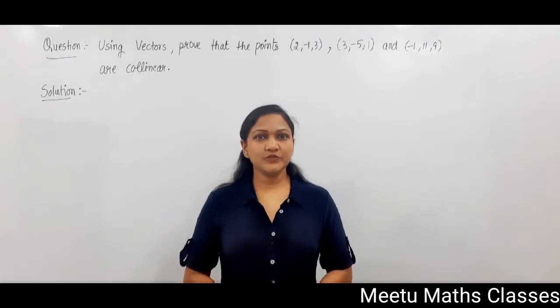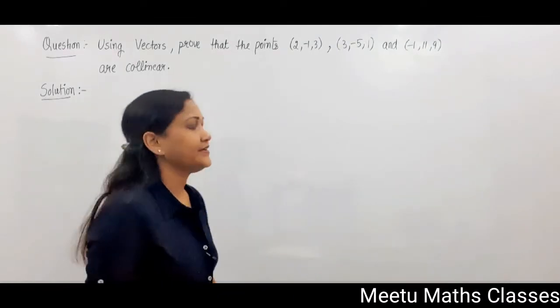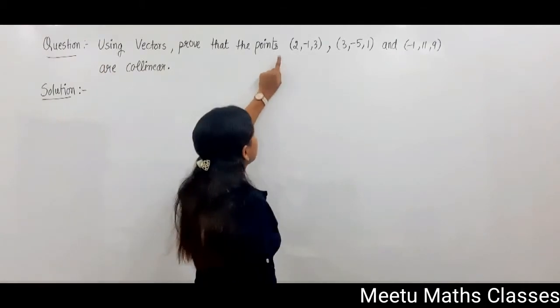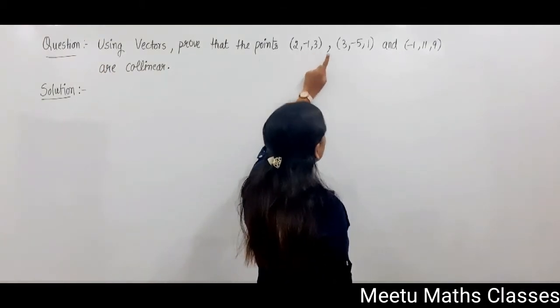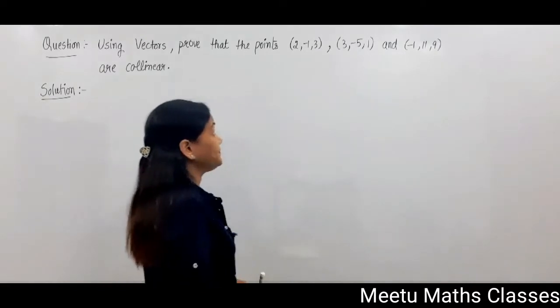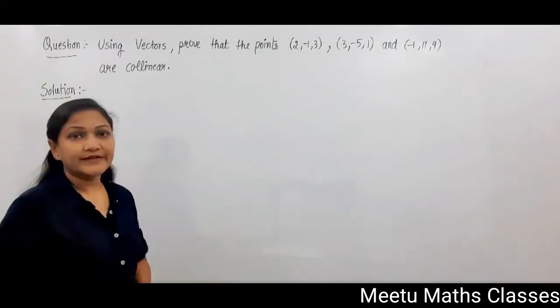Hello students, welcome to Me2Maths classes. Your question is using vectors prove that the points (2, -1, 3), (3, -5, 1) and (-1, 11, 9) are collinear.